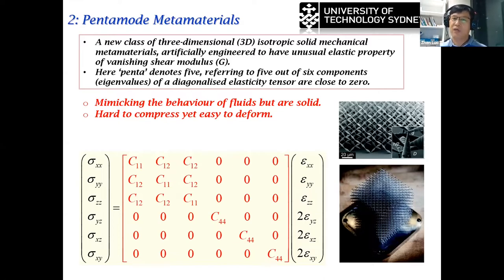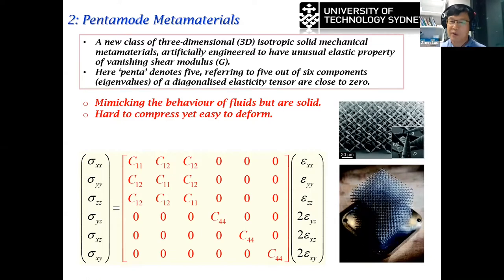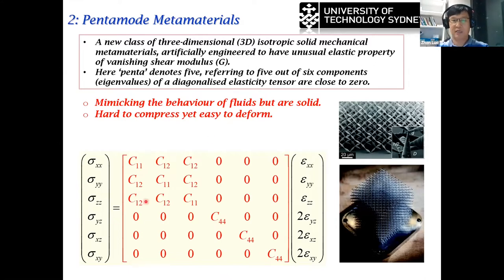Pentamode metamaterials are used to mimic the behavior of fluidics but are solid — hard to compress yet easily deformed subject to shear force. Our story is from the elastic tensor. Some research discusses pentamode using 2D materials, but the 2D elasticity tensor only gives three eigenvalues, so those are actually pseudo-pentamode materials. The concept of 'penta' doesn't have a clean meaning for 2D structures. For 3D structures, it makes sense because we have six eigenvalues: five are close to zero, but one is not. This is the mathematical-mechanical background of pentamode metamaterials.